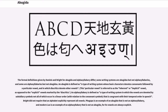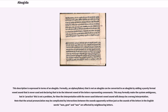Bright did not require that an alphabet explicitly represent all vowels. Ethiopic is an example of an abugida that is not an alpha syllabary, and modern Lao is an example of an alpha syllabary that is not an abugida, for its vowels are always explicit. An alpha syllabary that is not an abugida can formally be converted to an abugida by adding a purely formal vowel sound declared to be the inherent vowel. Note that the actual pronunciation may be complicated by interactions between sounds, just as the sounds of letters in the English words 'WAN' and 'DEMON' were affected by neighboring letters.